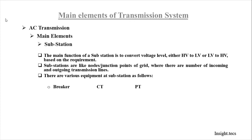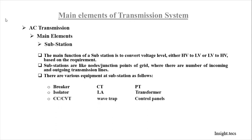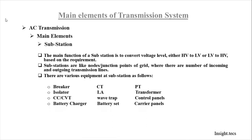The equipments used in a substation include: circuit breaker, CT, PT, isolator, lightning arrestor, transformer, CC or CVT, wave trap, various control panels, battery chargers, battery set, and carrier panels.